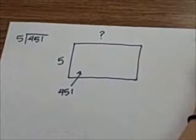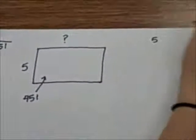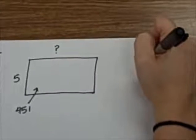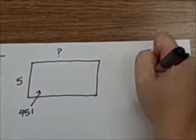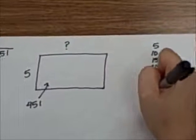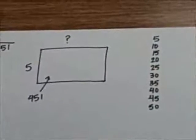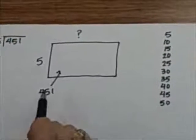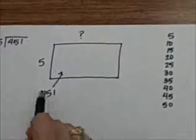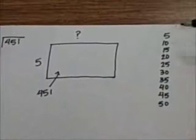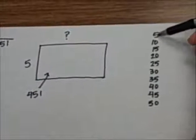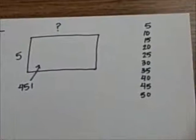To help myself not get stuck, I'm going to write out my 5s up to 50 off to the side. Now I need to ask myself, what is the closest I can get to 451? I see that 5 times 1 is 5, 5 times 2 is 10.